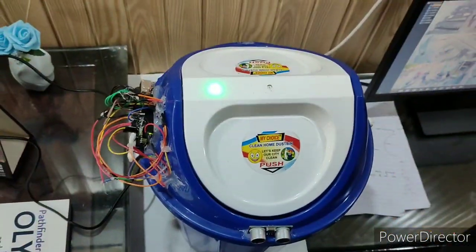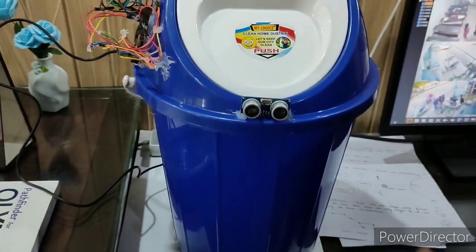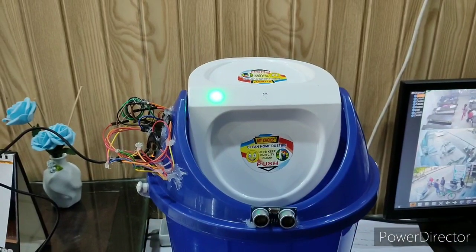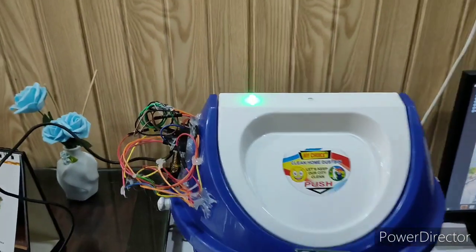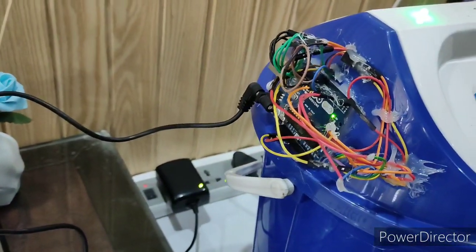In our smart dustbin, we have used one ultrasonic sensor at the front. This ultrasonic sensor will be detecting an object and then one mini servo motor will be opening and closing the flap of dustbin. We are controlling the whole operation of this system by one Arduino Uno board which is fitted here.